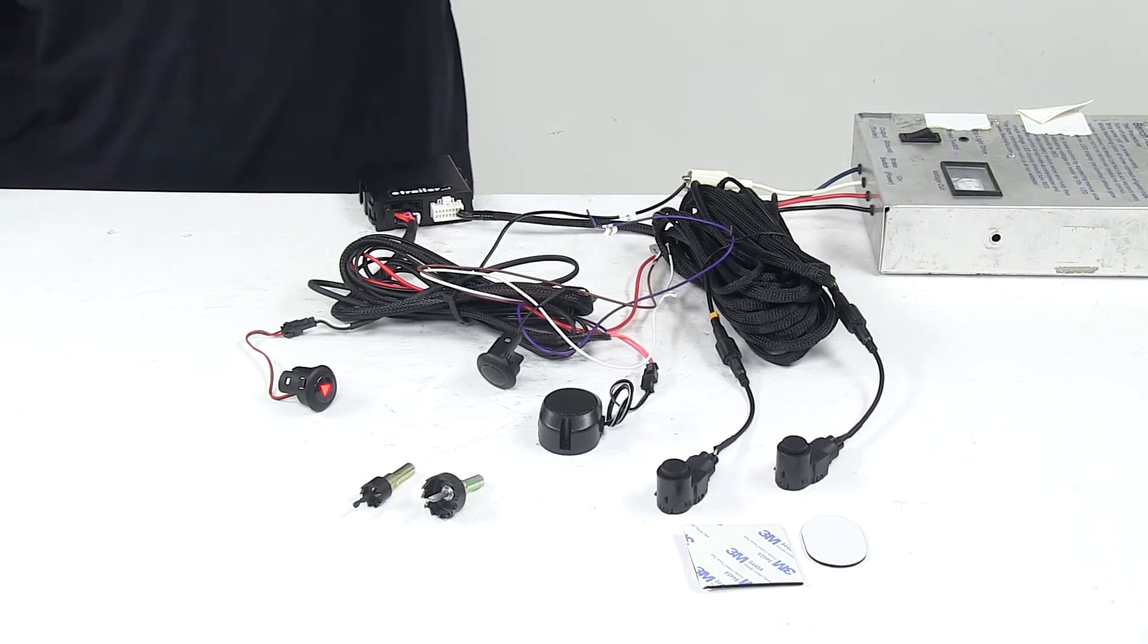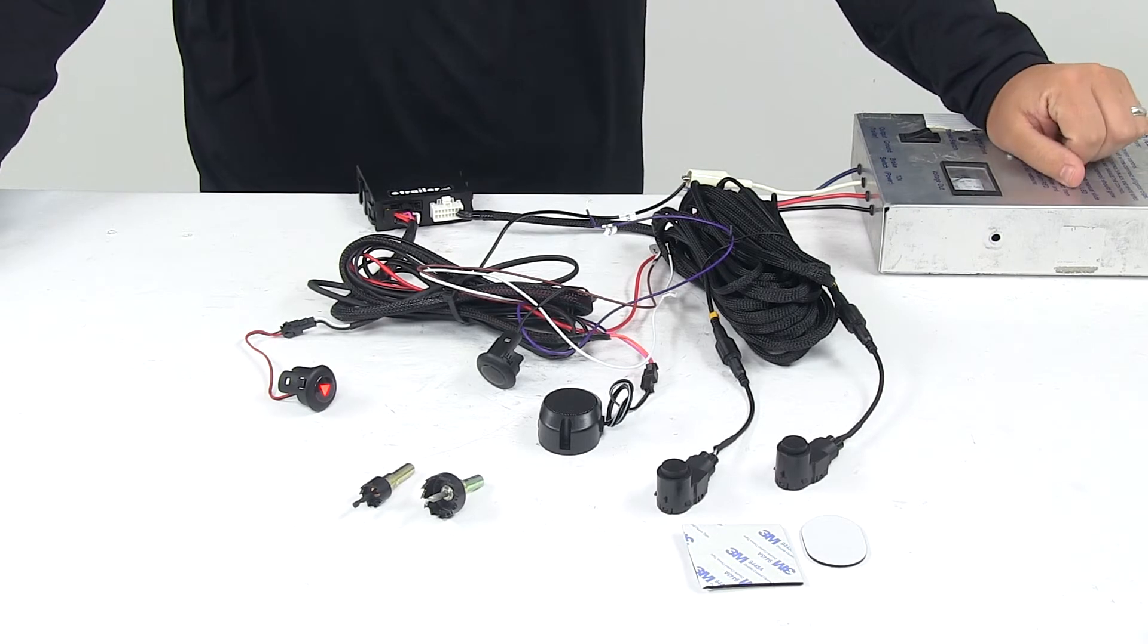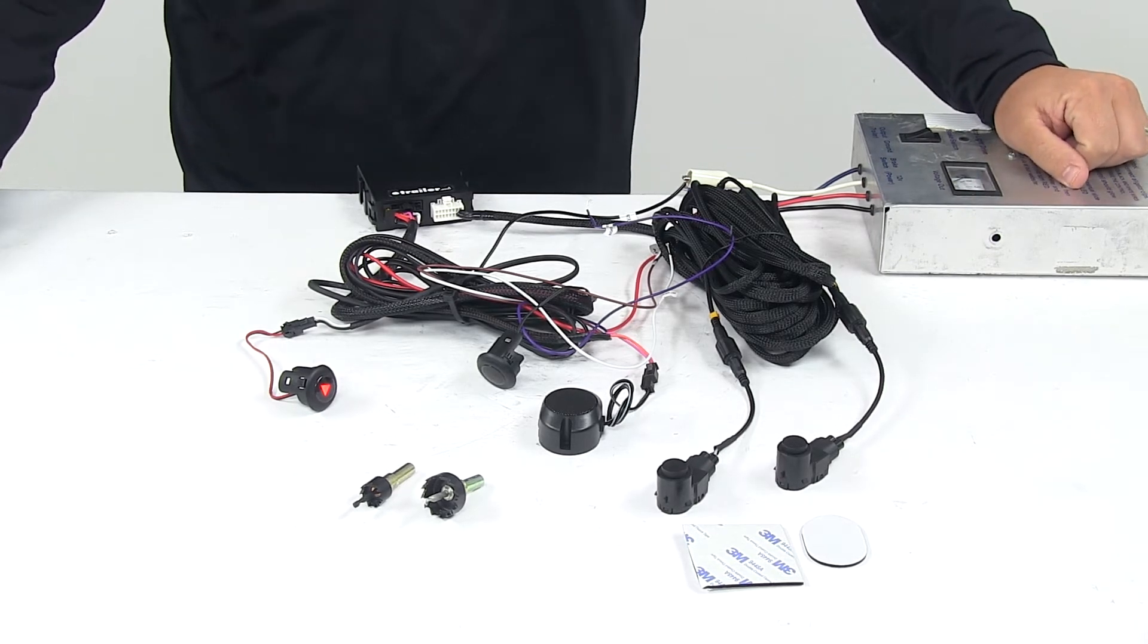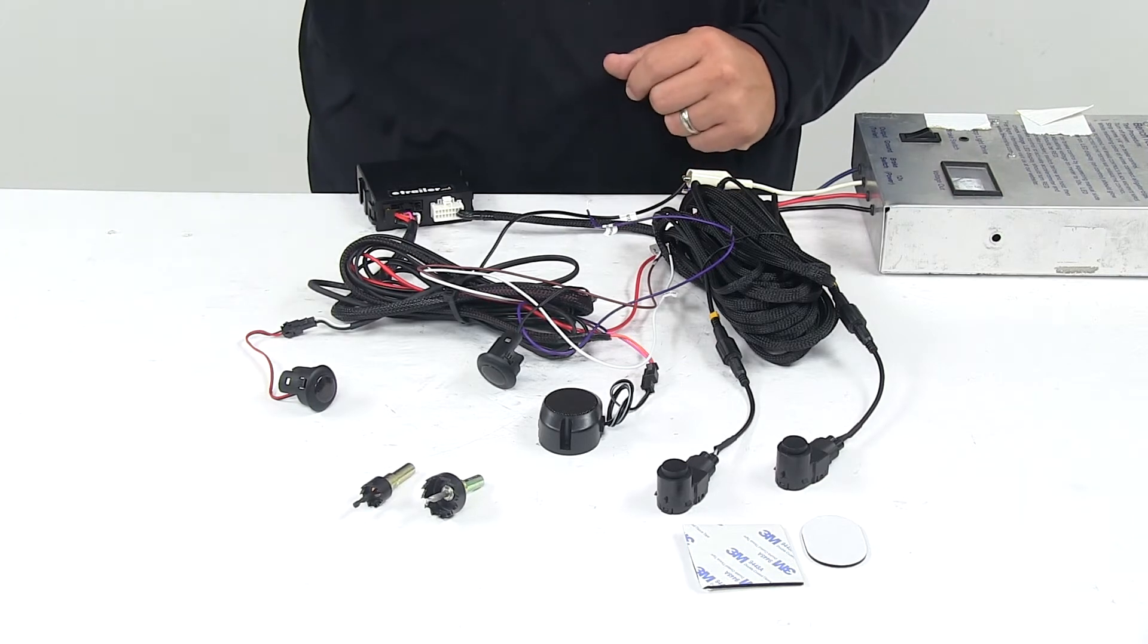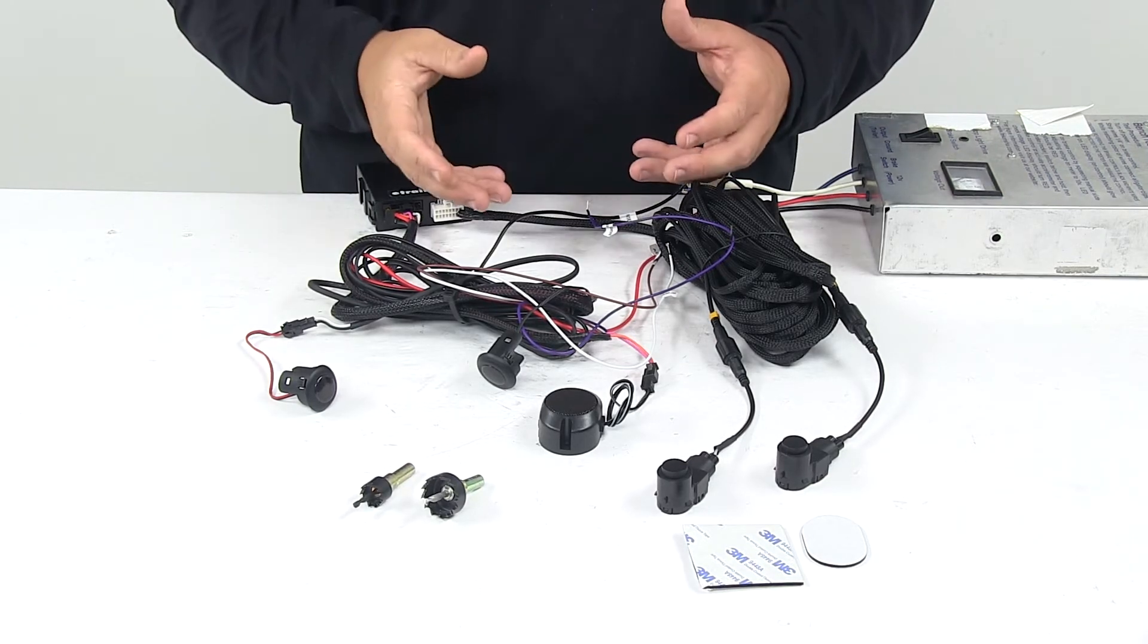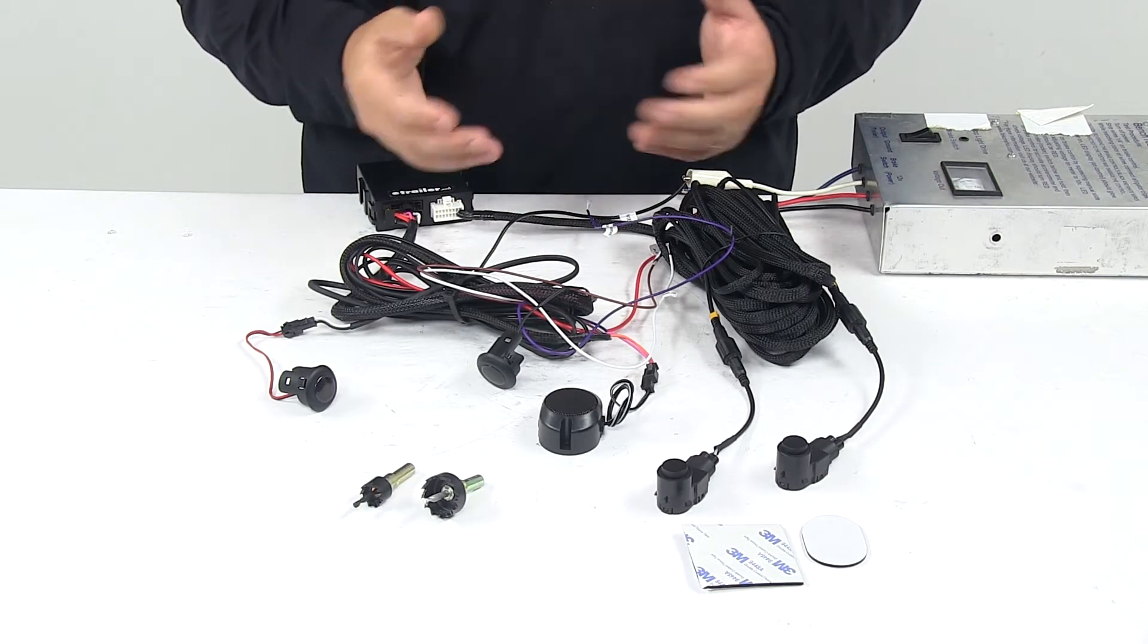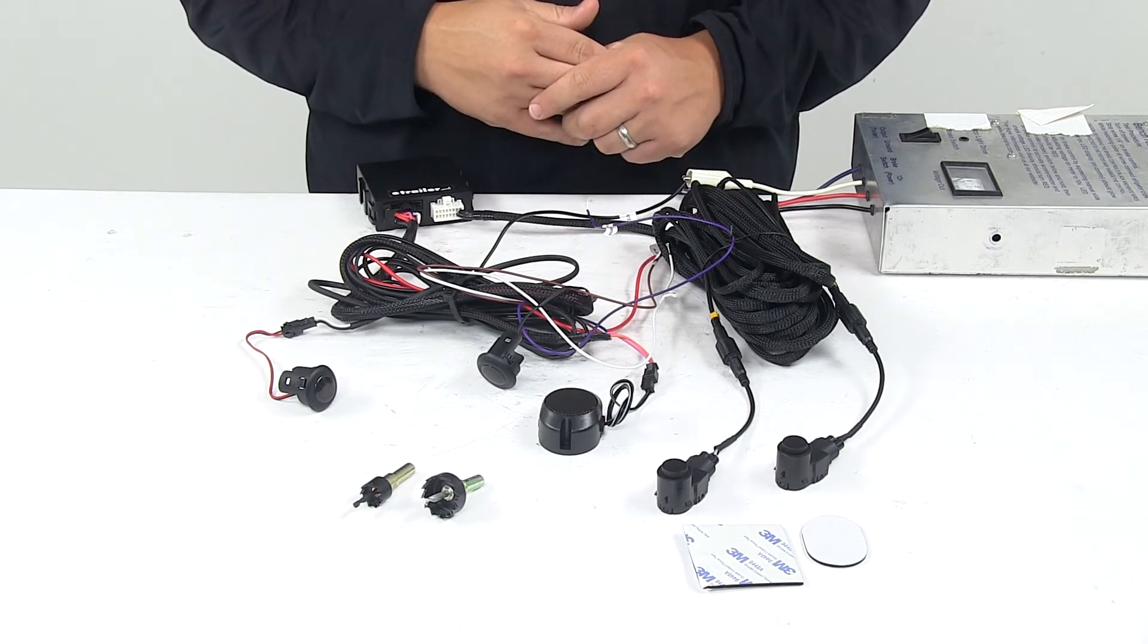Today we're taking a look at the rear view safety blind spot sensor system. The system mounts on either side of your vehicle to alert you of vehicles in your side blind spots. It really helps to eliminate blind spots and assists in highway driving and lane switching.